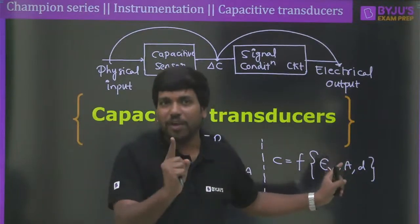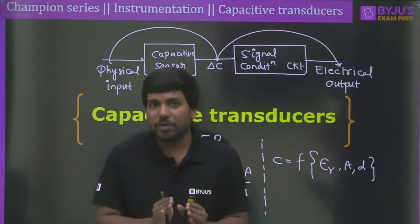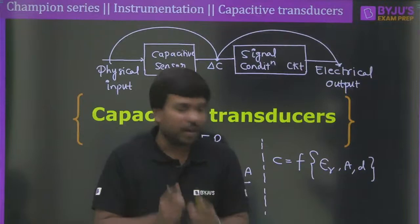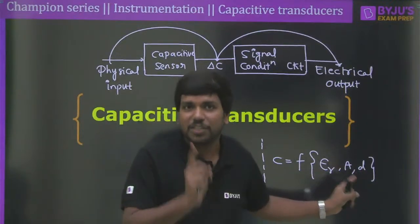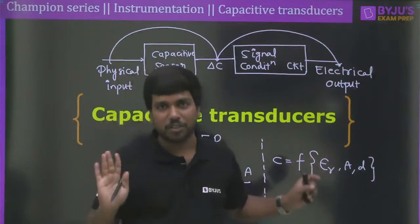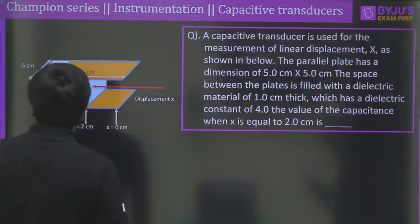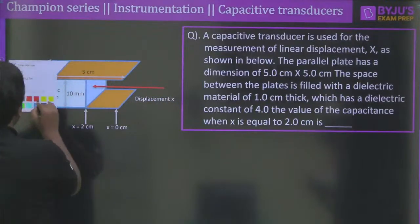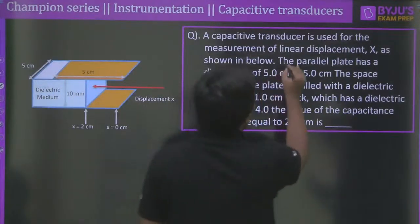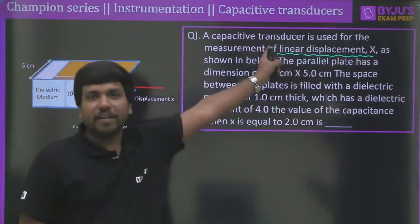Now let's get into the first question. A capacitive transducer is used for the measurement of linear displacement, termed X. The parallel plate has a dimension of 5 cm × 5 cm. The space between the plates is filled with a dielectric material of 1 cm thickness with a dielectric constant of 4. Find the capacitance when X = 2 cm.